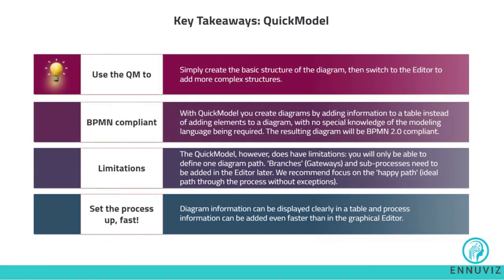Signavio Process Manager supports business process management with a central modeling component that acts as a central object repository. It has a folder structure to store and find processes, reporting functionality that aggregates all information on selected processes, version control to reverse changes, diagram comparison for AS-IS and TO-BE comparison, and the ability to capture additional information on processes and tasks like risks and controls.